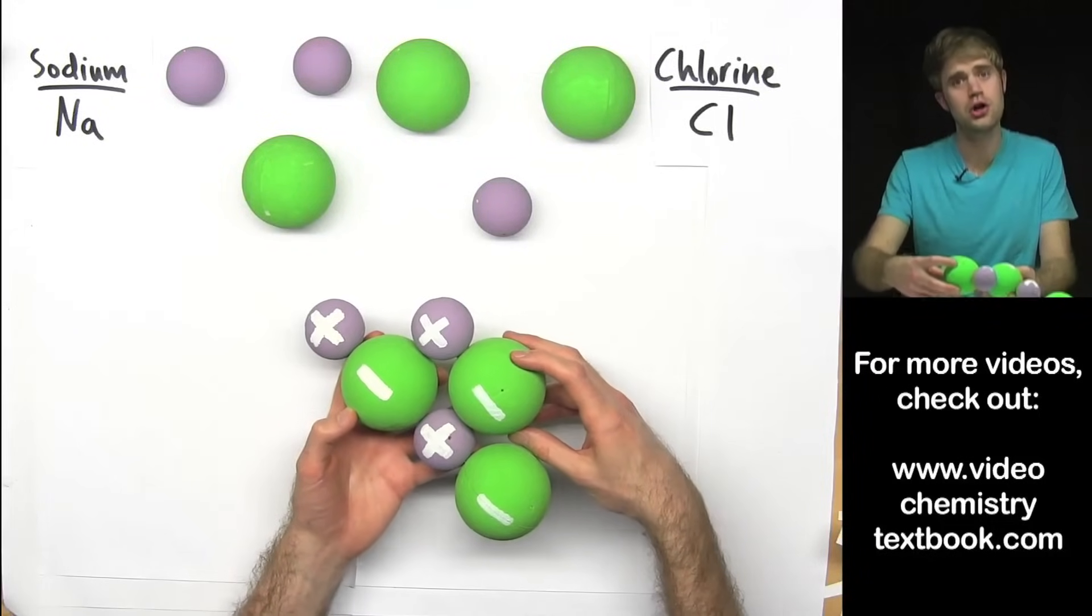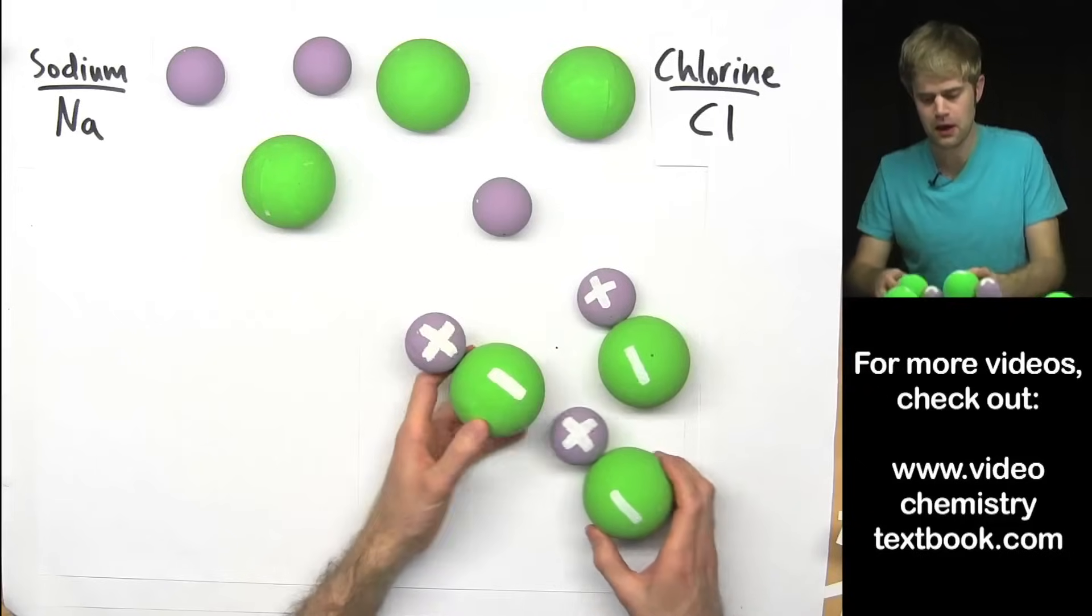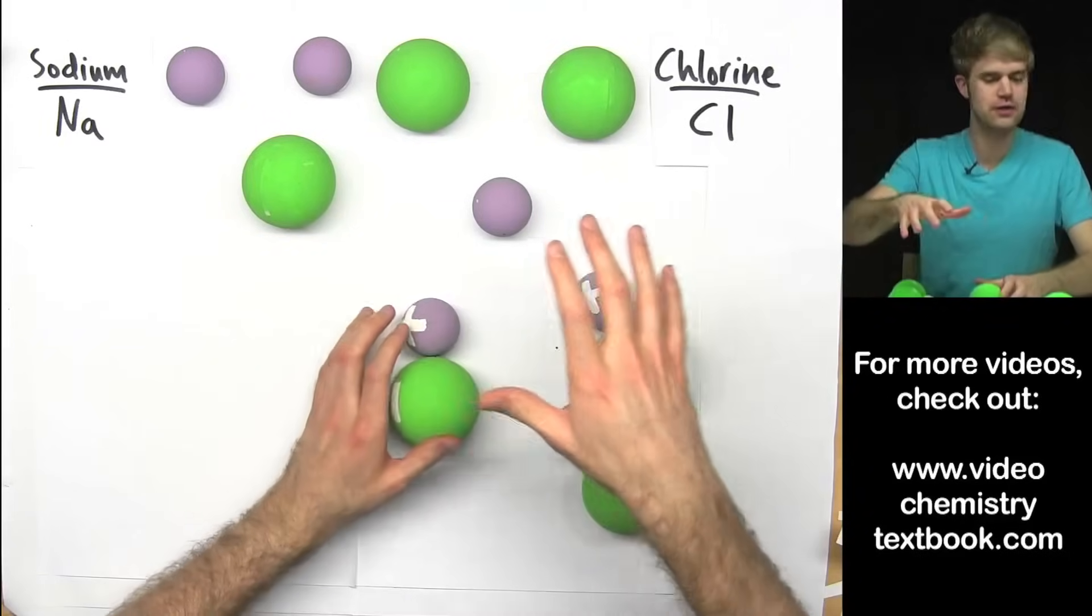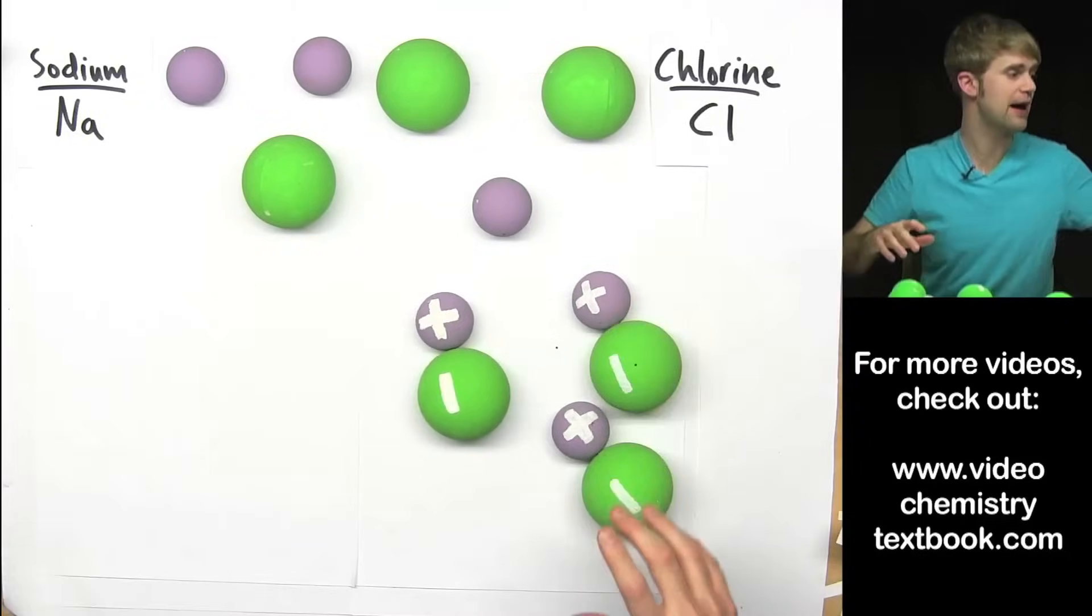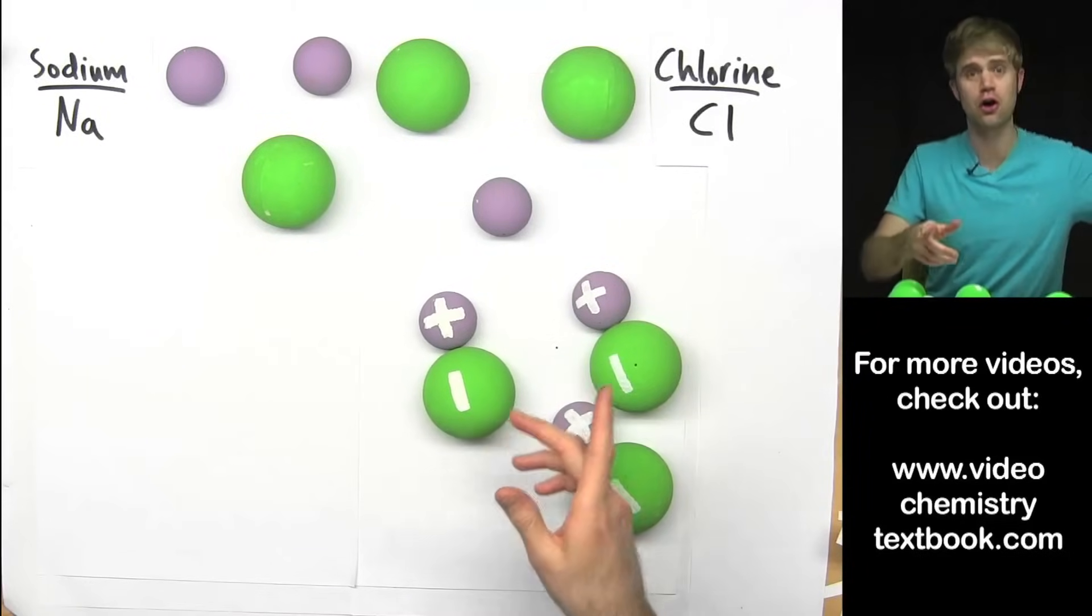And so we start building a much bigger shape. If we get a bunch of these sodium and chlorine atoms getting charges and coming together, we're going to end up with a shape like this.